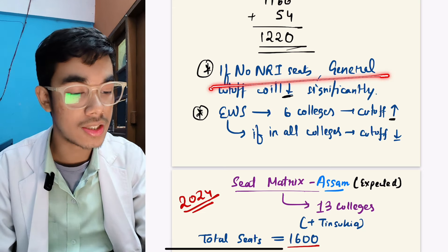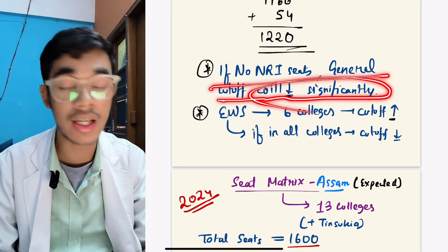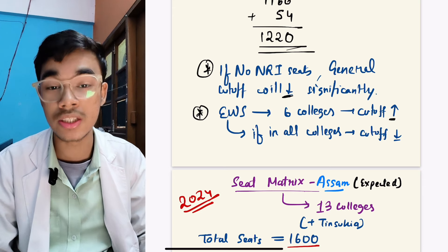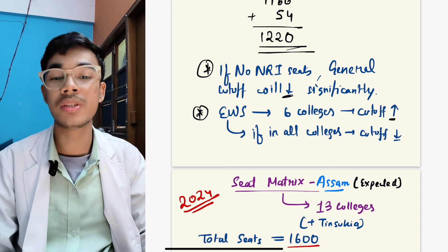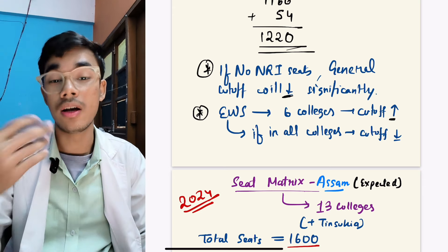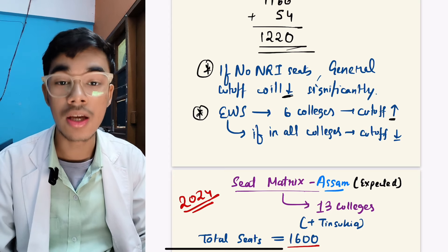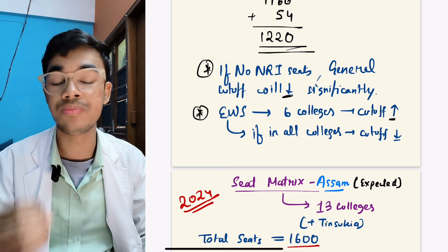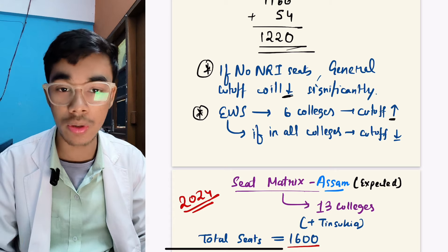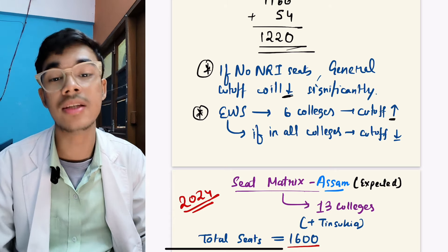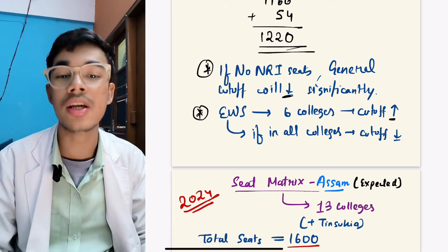If no NRI seats, the cutoff will decrease significantly. Yes, it is a very important thing. General cutoff can also decrease even though the competition will also be there. If not, then the cutoff will decrease because the seats are already so many.